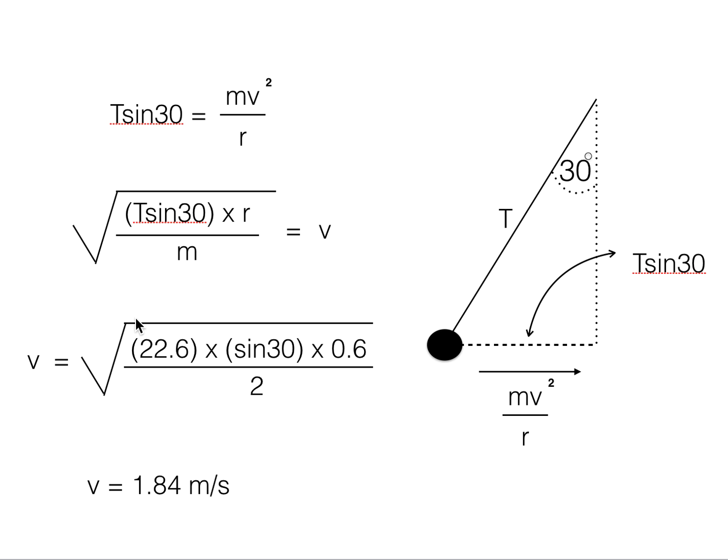And if we substitute these values into this equation, we get this equation. And we can put this expression into our calculator and find a numerical value of v. It comes out as 1.84 metres per second.